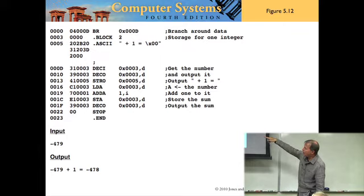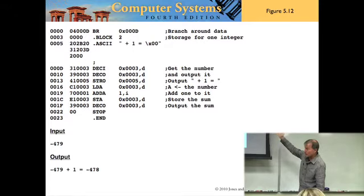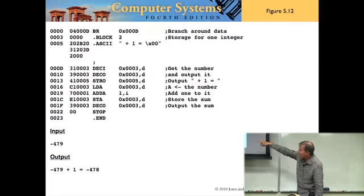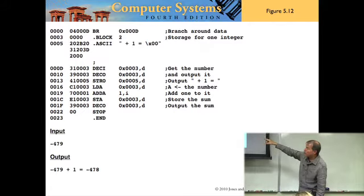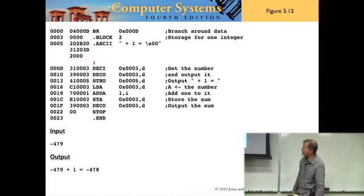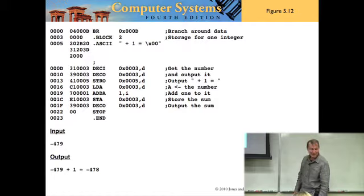What would happen if you forgot to put that sentinel in the dot ASCII? STRO would keep reading the next character. It would go to address 00D and interpret that as characters — for example, interpreting 31 as the character one. Then it would stop, because the next byte happened to be a stop instruction. Maybe we should demo that — we can predict what it would do.